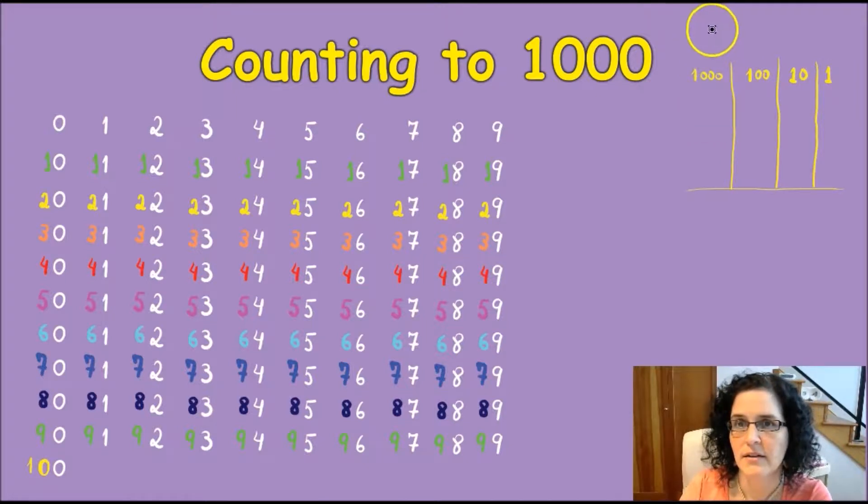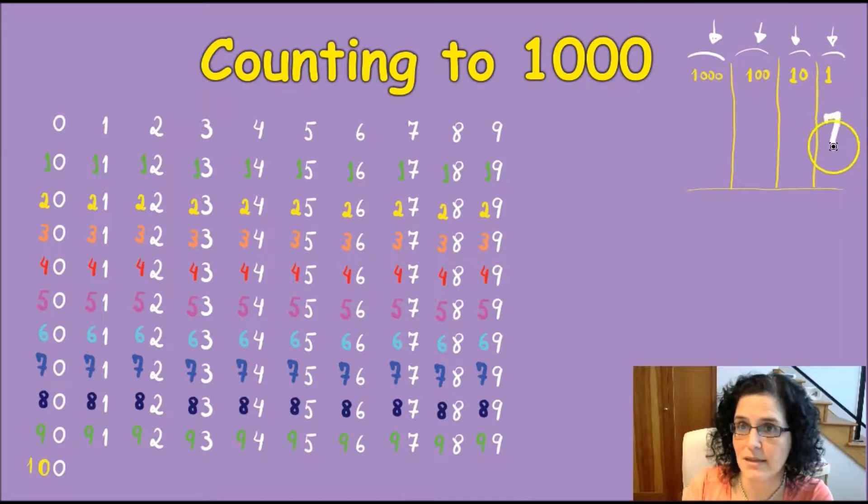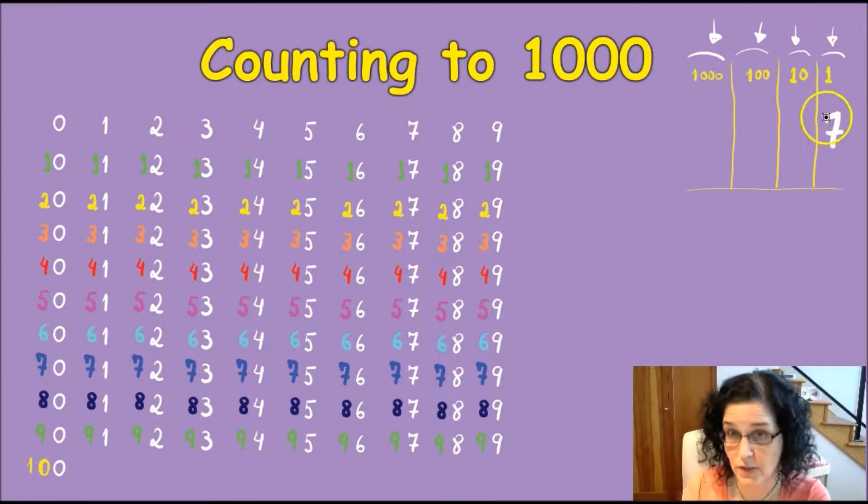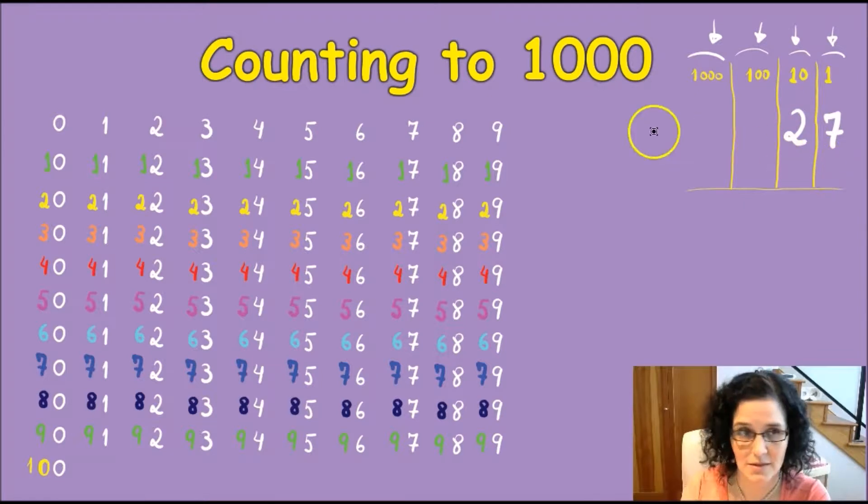What I have here is a little table with a space for the thousands, for the hundreds, for the tens, and for your units. So let's say I have a number like 27. I know that my 7 will go on the units and my 2 will go on the tens. That's pretty straightforward and that's great.